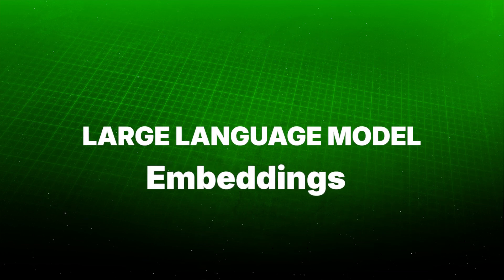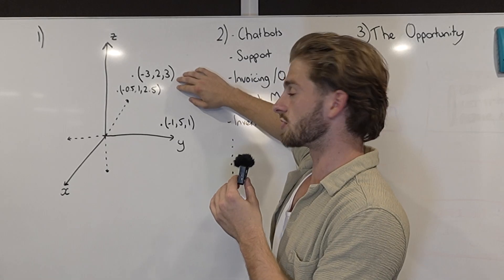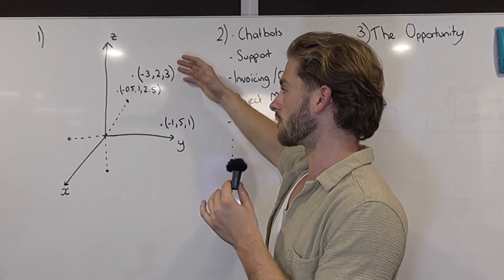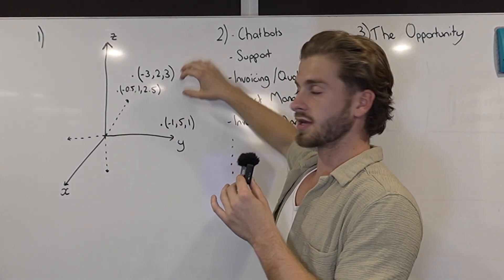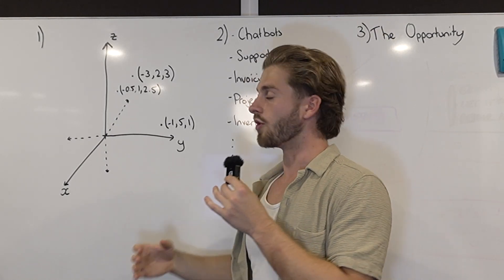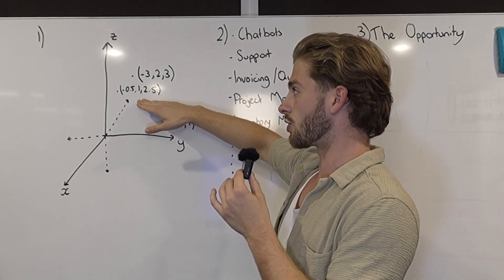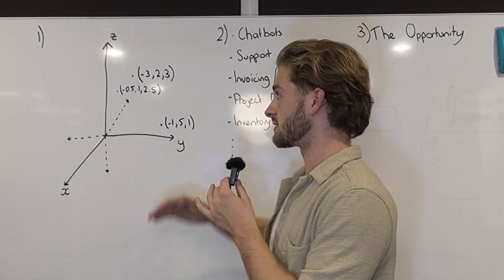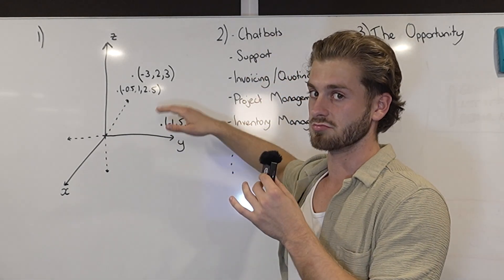What those LLMs usually have is a service called embeddings, and what an embedding is is a very large what's called a vector. So you'll see this here is a coordinate, and what the embeddings do is they return vectors or coordinates that look like this but have lengths of sometimes 1500 numbers long.